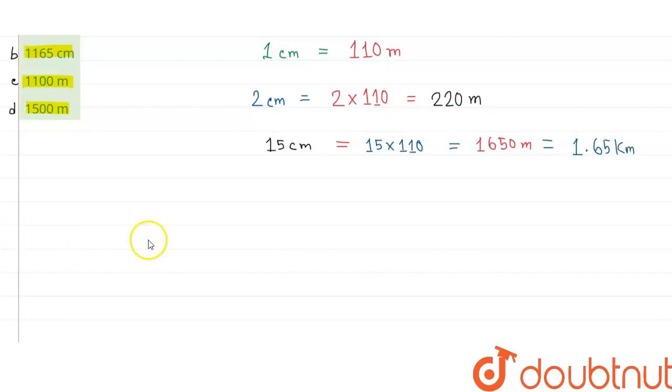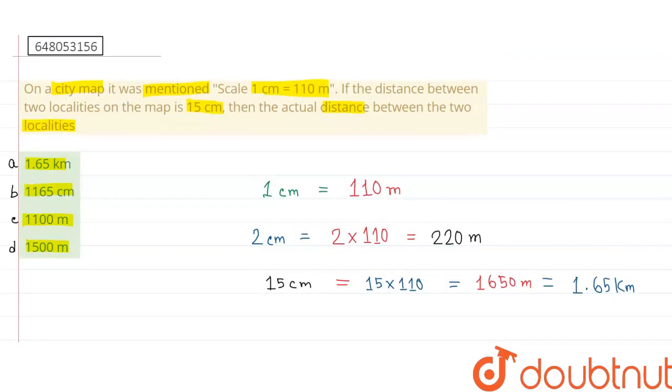चलिए देखते हैं कौनसे option में 1.65 km दिखाया है? Option A में देखिए दोस्तों, 1.65 km दिखाया है. So, the correct answer will be option A. Thank you.